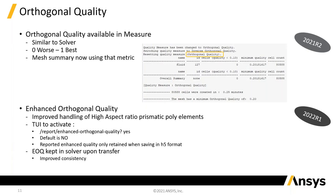The enhanced orthogonal quality handles high aspect ratio prismatic poly elements — exactly the elements you get when doing a very fine wall mesh with a polyhedral mesh, close to the wall in low Y-plus meshes. If the quality is bad there, that's an issue. Previously you might not detect that because of the metric. What you have to do now is just issue a TUI command set to yes, and it starts using this enhanced orthogonal quality. When you send this mesh through to Fluent in the solver, it will continue to use that.